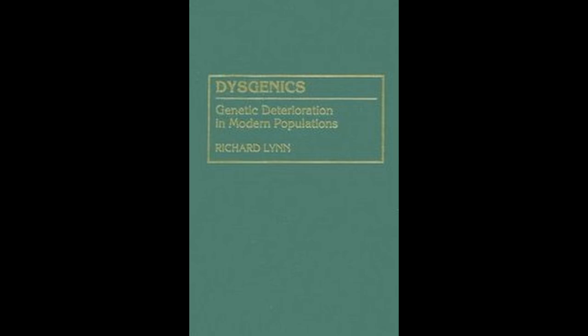With regard to intelligence, and what the eugenicists called character, natural selection in pre-industrial human societies operated principally through males. It is a general principle throughout animal species that males compete with one another for females. Typically it is the stronger, more aggressive, and healthier males who succeed in these competitions, secure females, and consequently transmit their genes for these characteristics to their progeny.